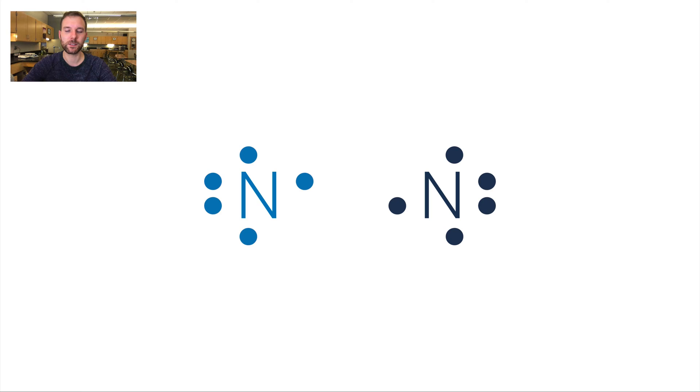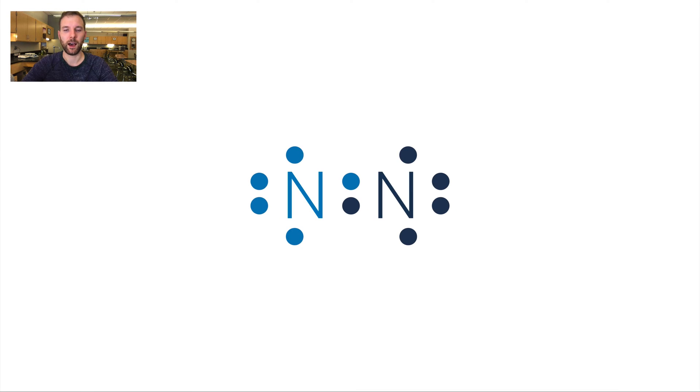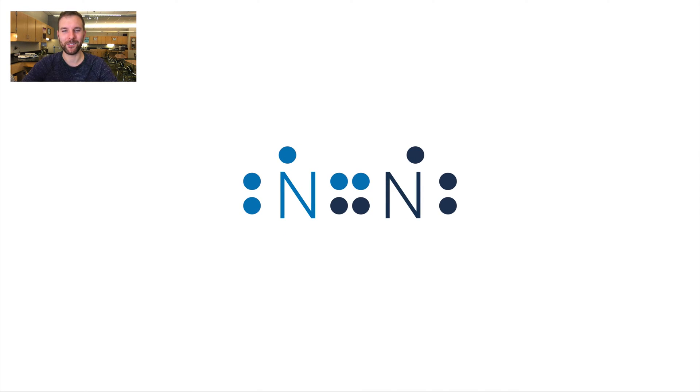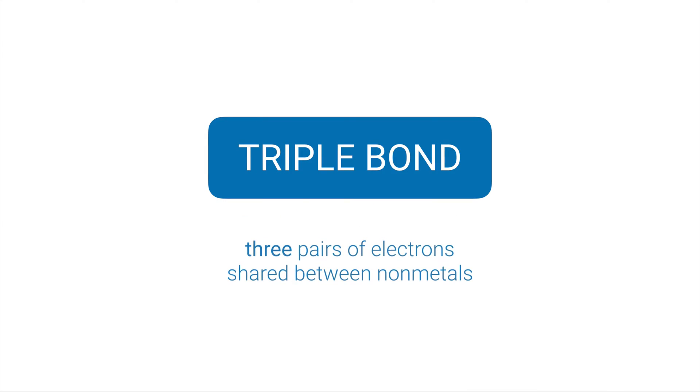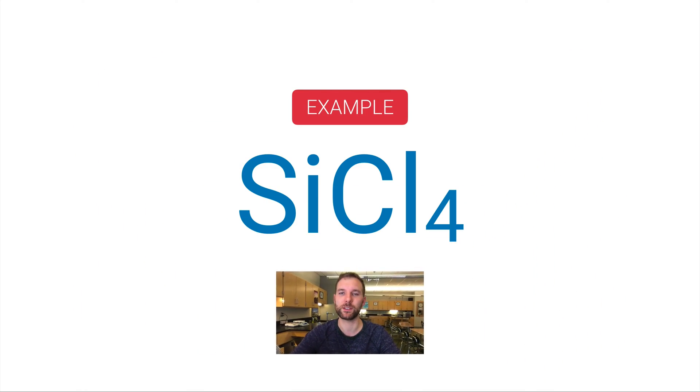Nitrogen is another diatomic element. Each nitrogen starts with five valence electrons. When you put them together they each have six, then another bond gives seven, and another gives eight — that's called a triple bond: three pairs of electrons shared between nonmetals. Triple bonds and double bonds are not as strong as single bonds because all that negative electron activity mashed in one spot makes it relatively easy to break apart.